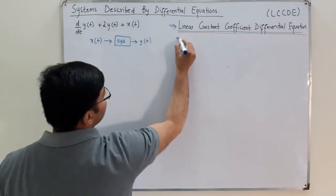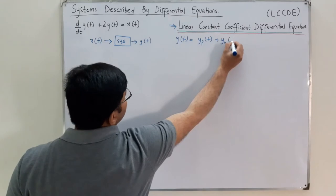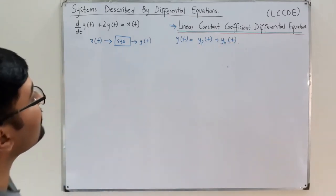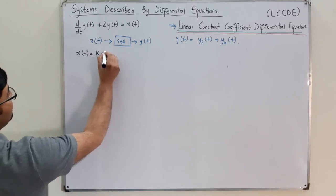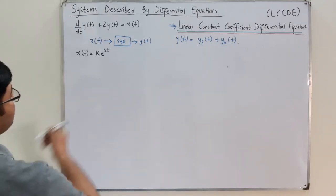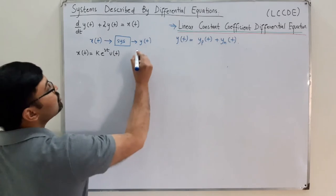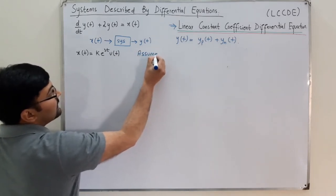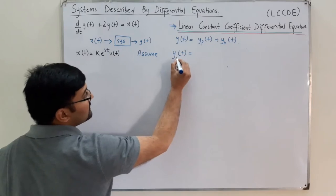Now let's say we solve it. The solution y(t) would be the sum of y_particular(t) plus y_homogeneous(t). For a particular input, let's say that input is x(t) = k times exponential of 3t, with u(t). Based on this input, I make an assumption: if this is the input, so the output would be something, and I name it y_p(t) — the particular solution.